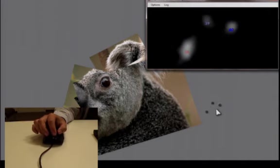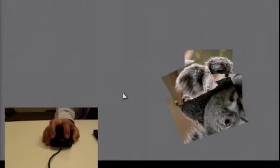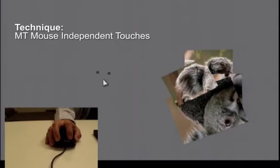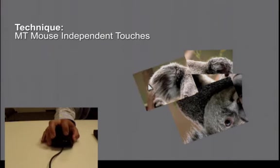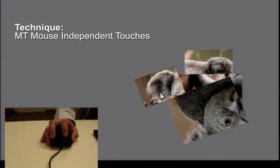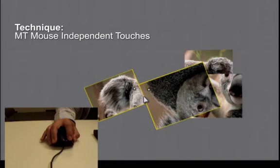In the next part of the video, we demonstrate the four interaction techniques explored in the paper. In the MT Mouse Independent Touches technique, objects are selected by touch. This allows the user to manipulate an object without clicking the mouse. Each cursor is completely independent, thus it is possible to select and move multiple objects at the same time.